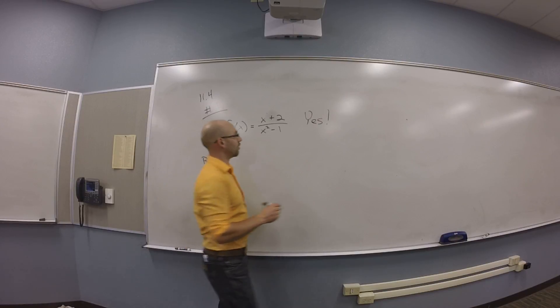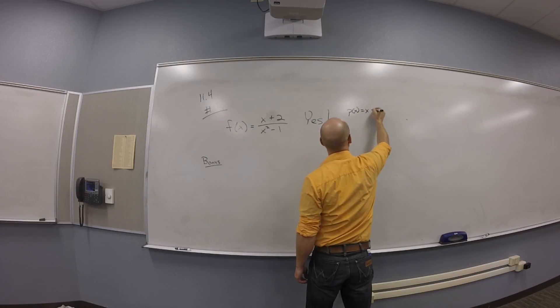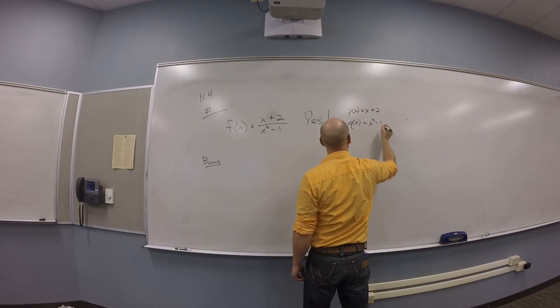So on this, that's P of X is X plus 2, and Q of X is X squared minus 1. Okay.